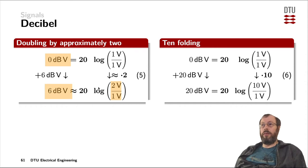Going up another factor of two from two volts to four volts would be approximately 12 dB volts. If you come from one volt and go to 0.5 volts or 500 millivolts, you would have minus six dB volts.